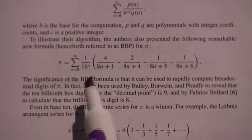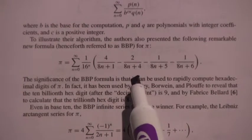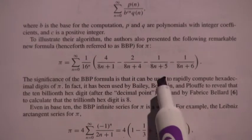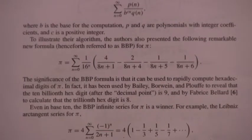Pi equals the sum of 1 over 16 to the n times 4 over 8n plus 1 minus 2 over 8n plus 4 minus 1 over 8n plus 5 minus 1 over 8n plus 6. So we have a different series here. Okay, what do you think of that series? And this goes off to infinity.